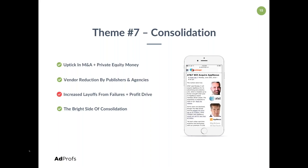I was wrong last year about my prediction that Rubicon was going to get acquired — I think it's a function of timing, and I think 2019 will be their year. There were also stories of publishers and agencies reducing the number of vendors they work with, for privacy compliance reasons, reducing liability, reducing risk of data leakage, ads.txt cutting off resellers, prioritizing direct relationships, improving user experience, and faster load times. Layoffs were another effect of consolidation: Oath had basically 10,000 people take severance packages, 7% of Verizon Media were let go, OpenX laid off 100 people in December, Rubicon laid off 100 people in March.